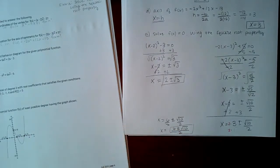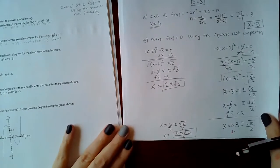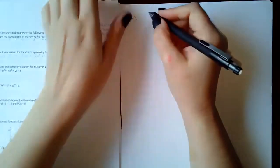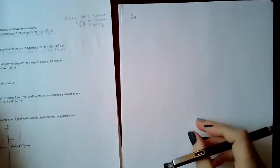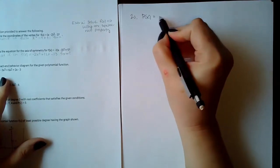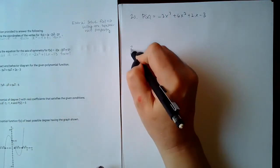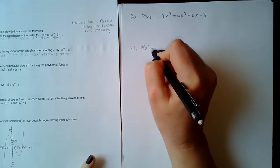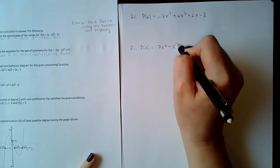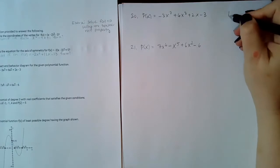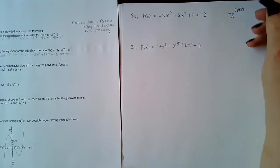Those were the extra examples. Now continuing to number 20, which asks for the correct end behavior. When asking for end behavior, you need to have all the different types with a little explanation. If you have a positive coefficient and an even exponent, the graph goes up on both sides. A negative coefficient with an even exponent goes down on both sides.